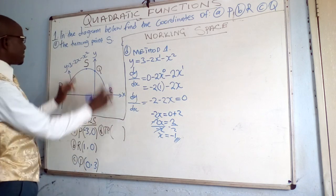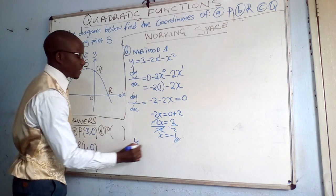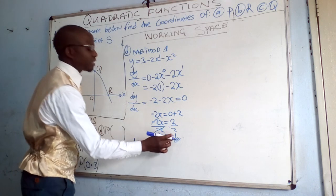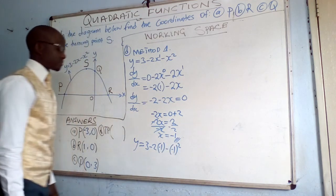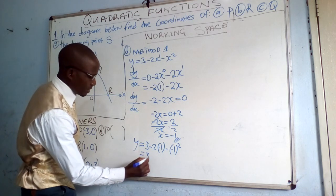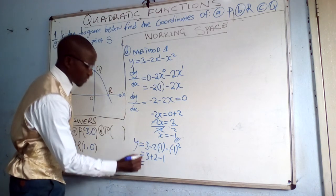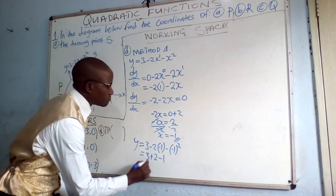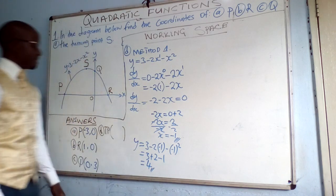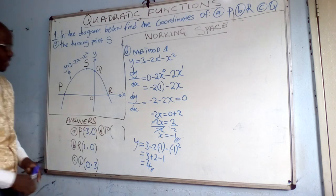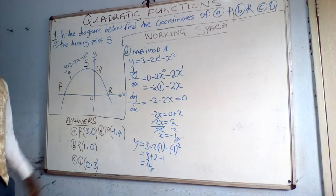If x equals negative 1 at the turning point, what about y? Go back to the original function. y equals 3 minus 2 times negative 1 minus negative 1 to the power 2. This gives 3 plus 2 minus 1, which is 4. So y equals 4. Therefore the turning point coordinates are (negative 1, 4). This is method 1.